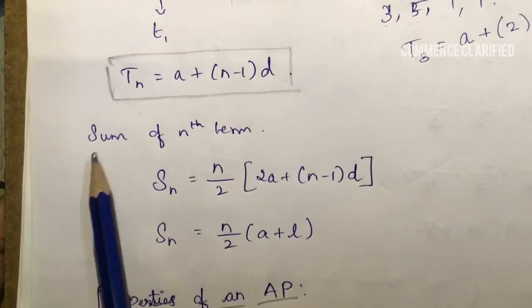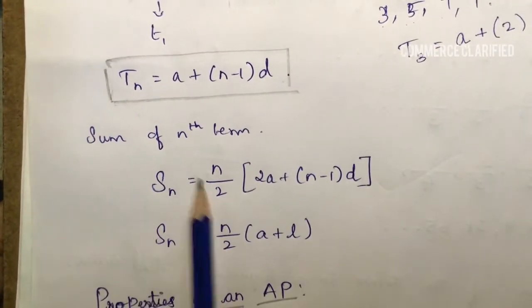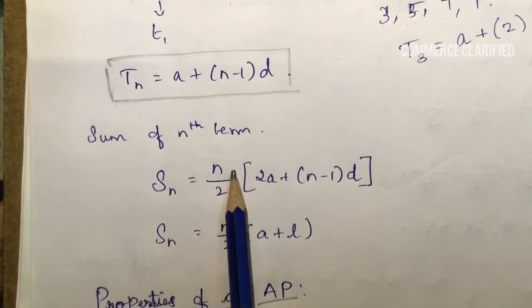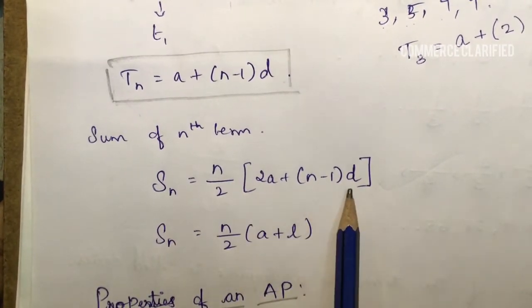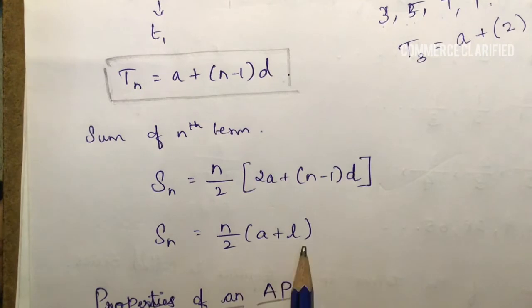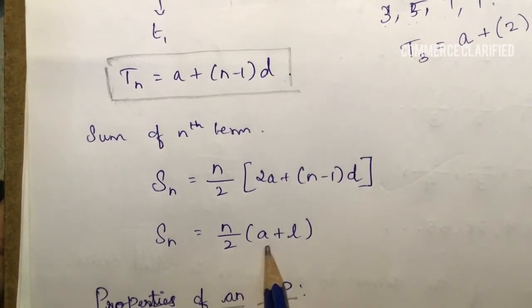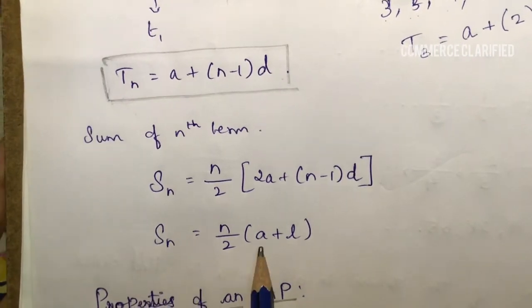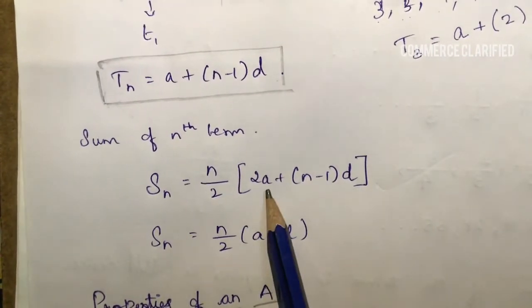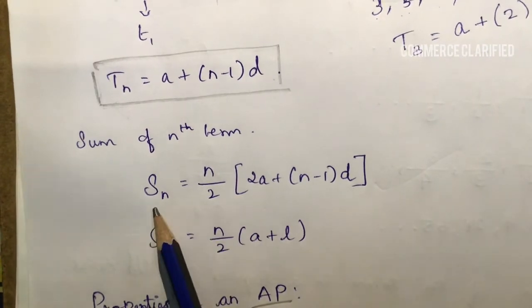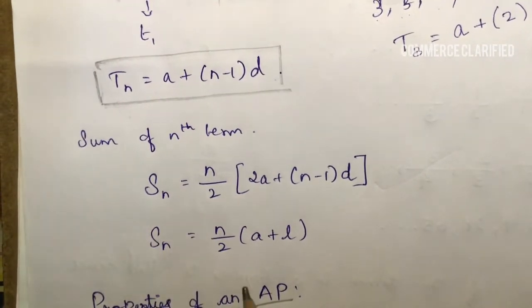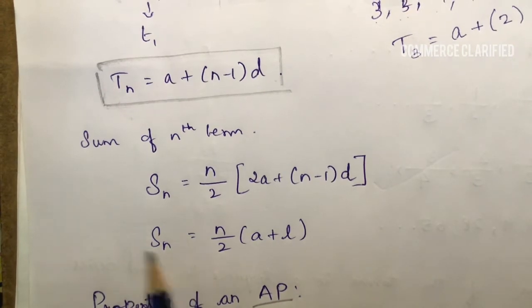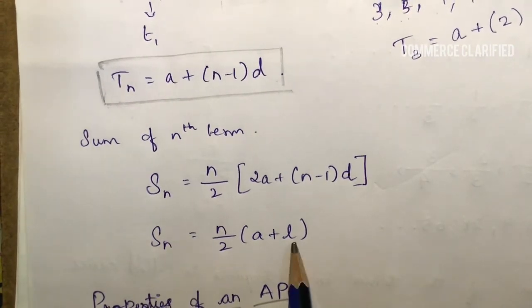The sum of nth term is the formula for the overall total value. The sum of nth terms has two forms: first, S_n equals n by 2 into (2a plus (n minus 1) into d); second, S_n equals n by 2 into (a plus l), where l is the last term.